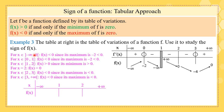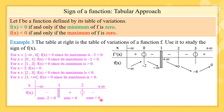We can simplify this verbal discussion with a summary table. From -∞ to 1, f(x) is negative because its maximum is -2. From 1 to 2, f(x) is positive because its minimum is greater than 0. And from 2 to +∞, f(x) is negative because its maximum is less than 0.